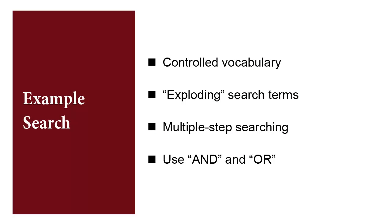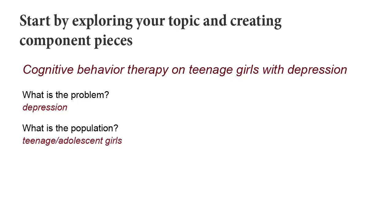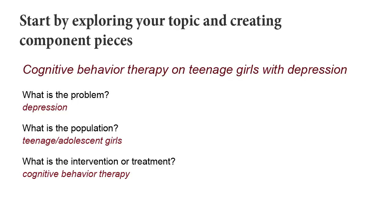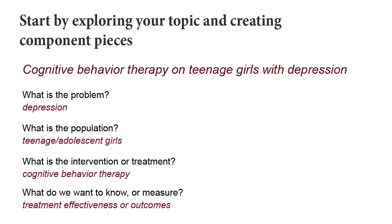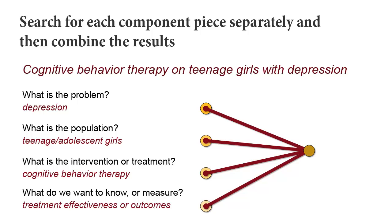Now that you are armed with the unique features of PsychInfo, let's do an example search to see how everything works together. Let's say we are interested in learning about the impact of therapy on teenage girls with depression, focusing on cognitive behavior therapy. It may be helpful to break your thoughts into the following pieces: What is the problem? What is the population? What is the intervention or treatment? And what do we want to know or measure? After you have broken your topic into these questions or component pieces, you will run a search for each component separately and then combine them.